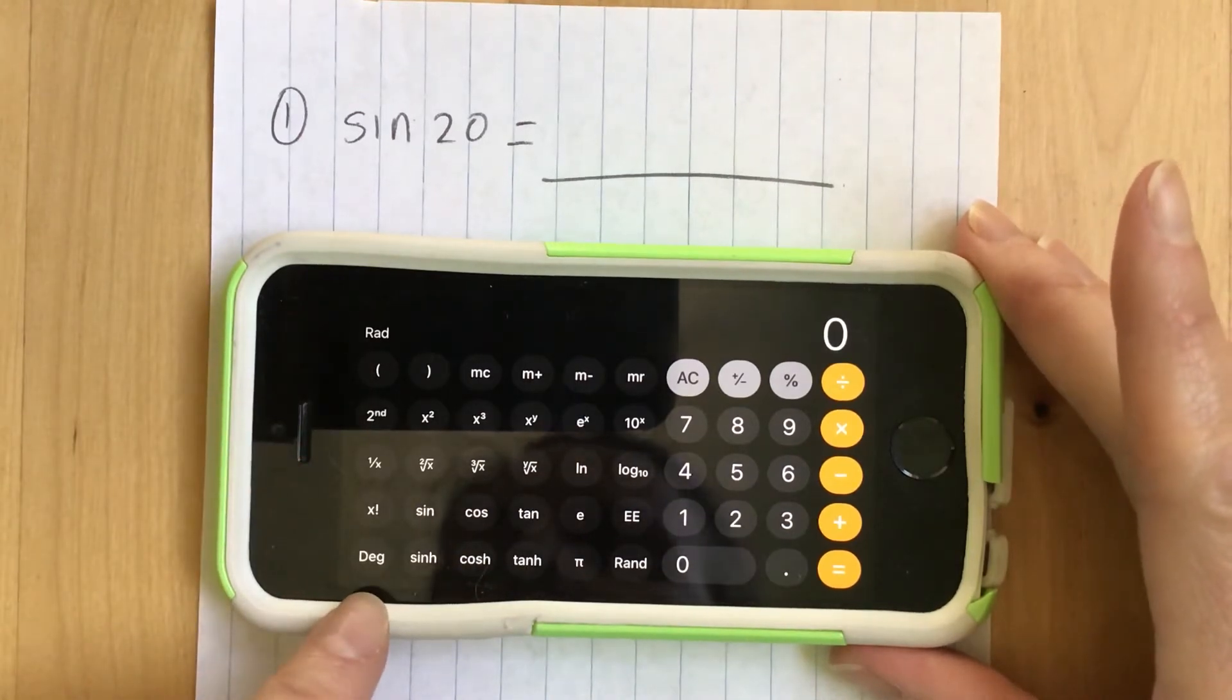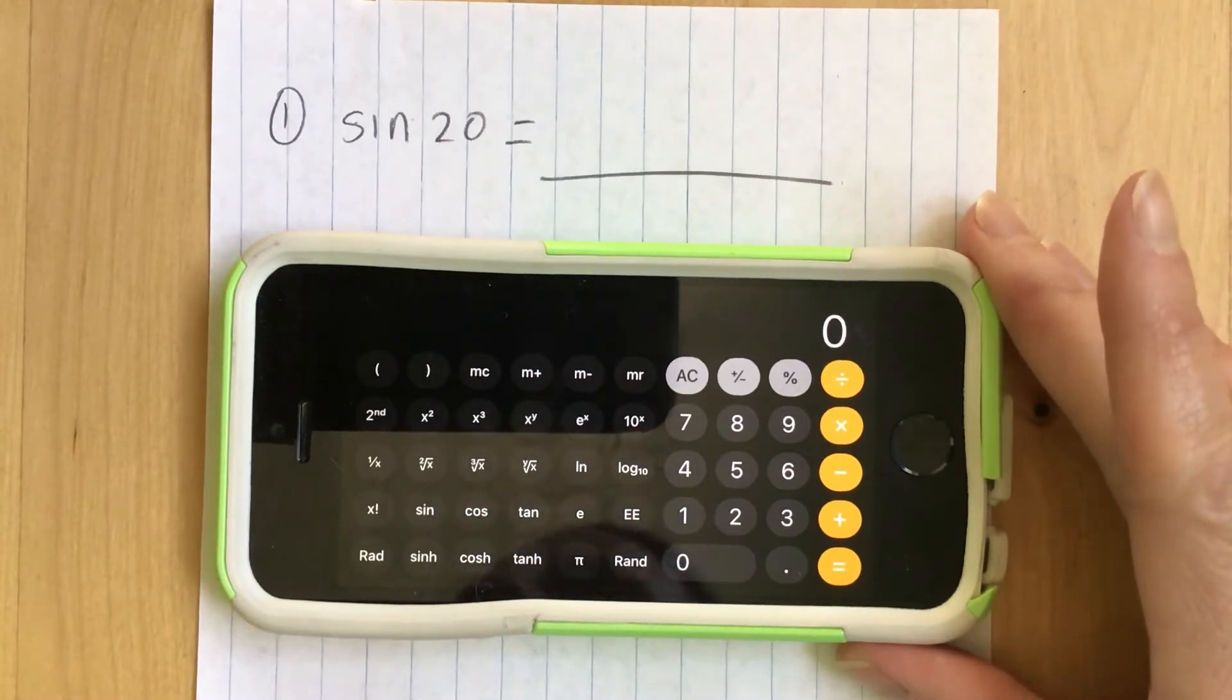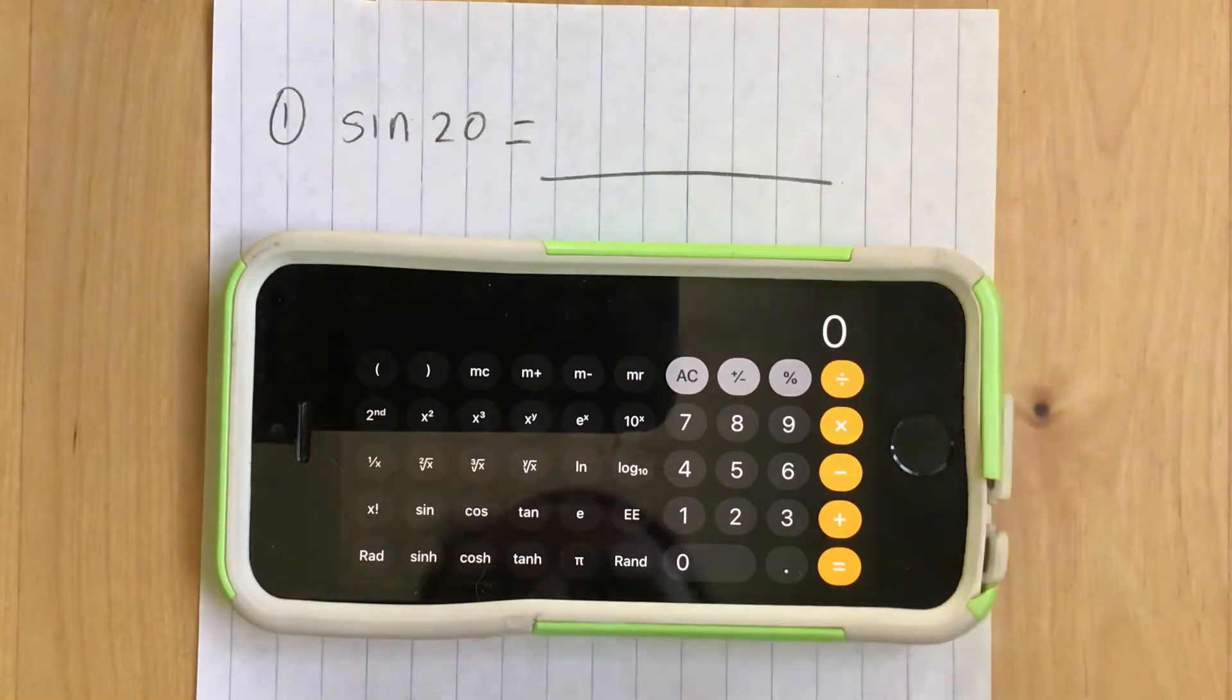See how it says DEG down here. This is what we want. We want it in degrees. That's the default mode. So just make sure that it's in degrees. It's kind of counterintuitive that it says RAD when it's in degrees but it is.